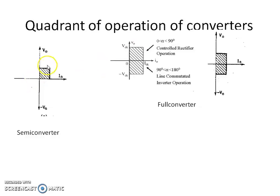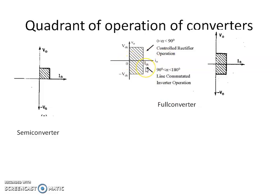The semi-converter gives only rectification operation, but with a full converter, by varying the firing angle from 0 to 180 degrees of the controlled switches, we can vary the average output voltage from positive to negative. We can obtain both positive and negative voltage with a full converter, which consists of four controlled switches. If we vary the firing angle from 0 to 90 degrees, the output voltage is positive and output current is positive — we can obtain first quadrant operation.